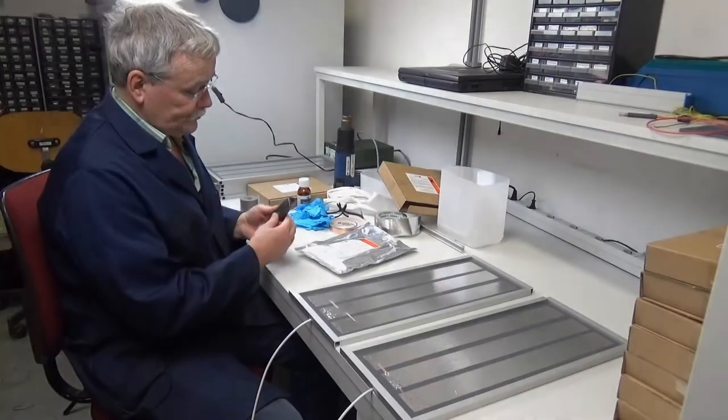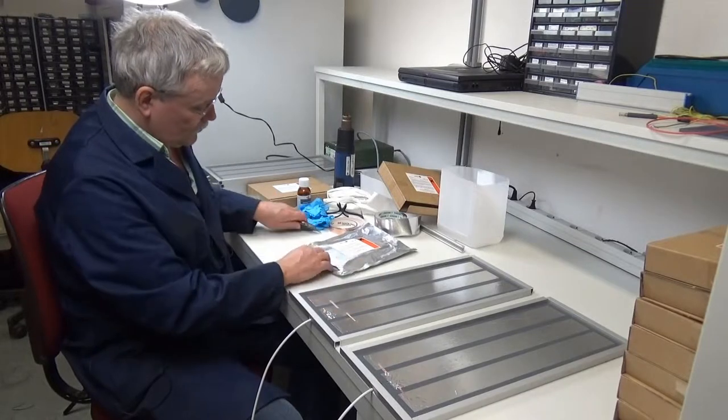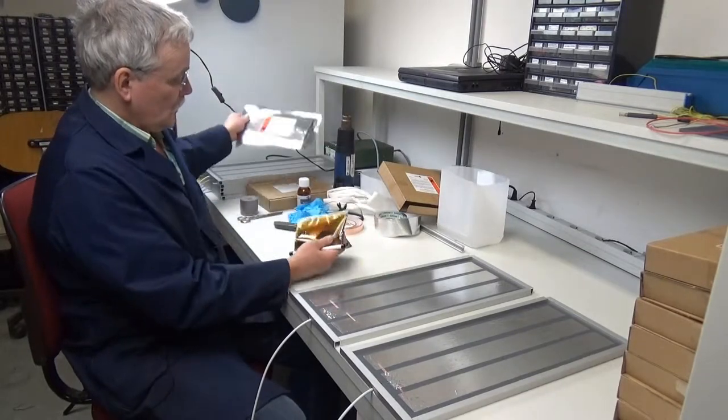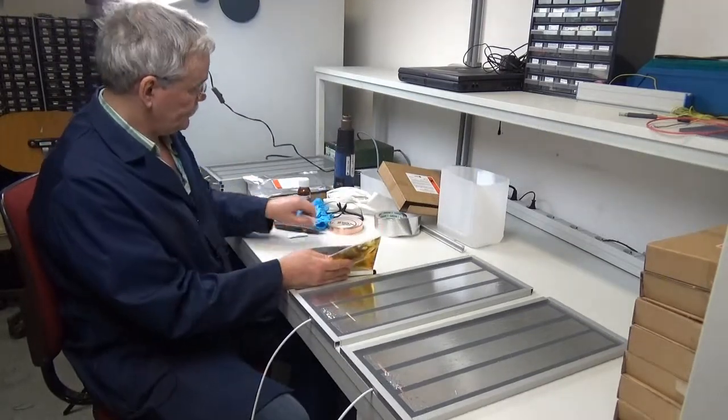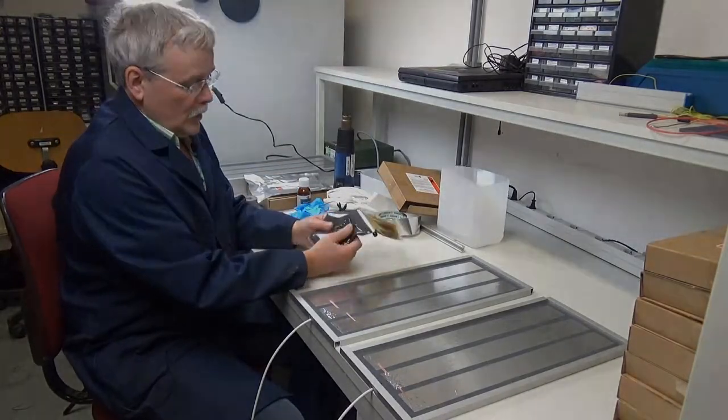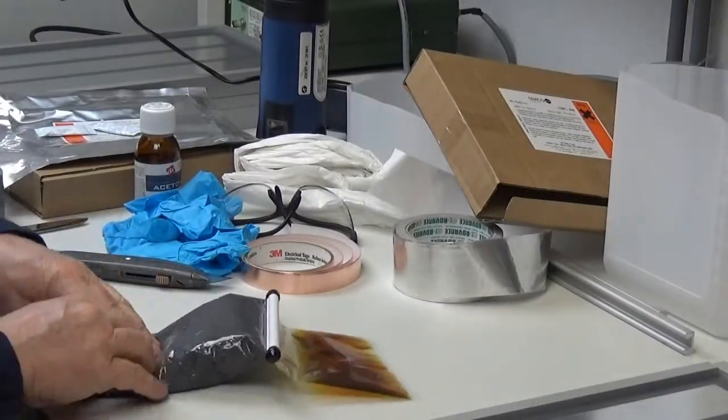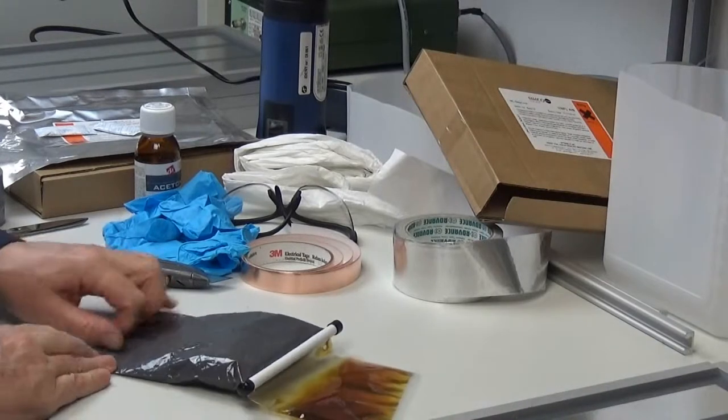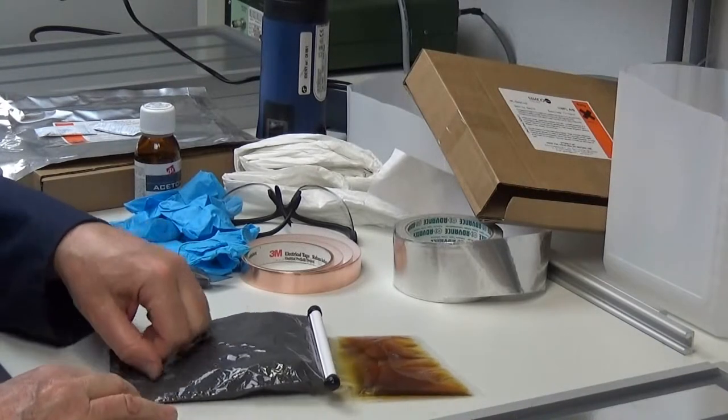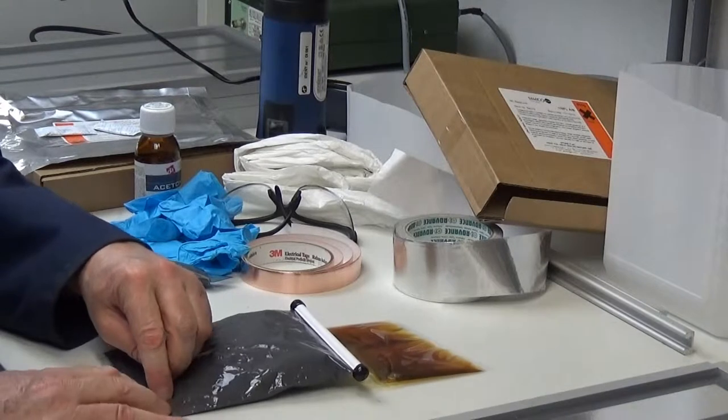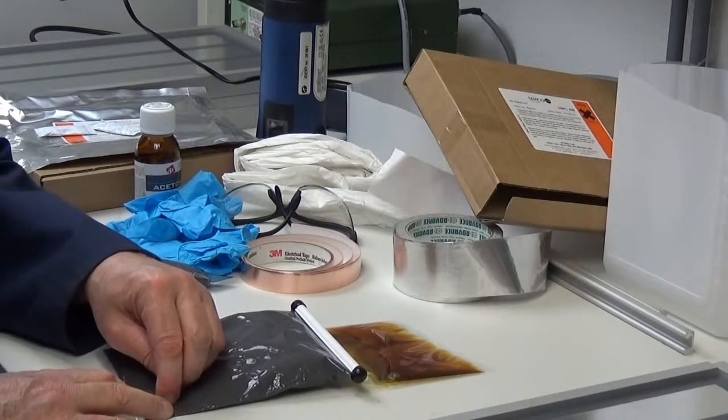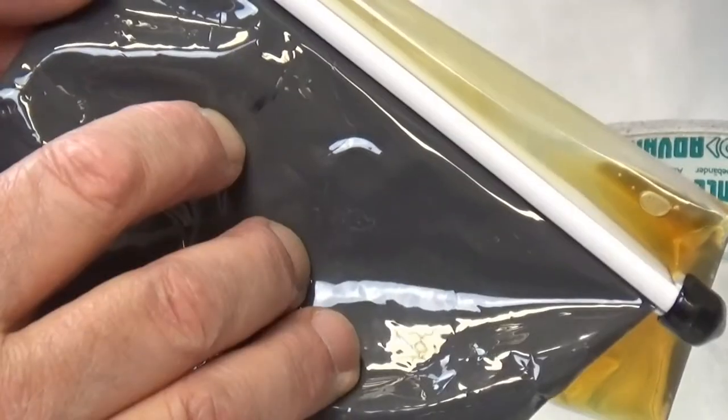And then we're going to start mixing the resin. Open on this side and start kneading the resin first for 3 to 5 minutes. Then remove the separation strip.